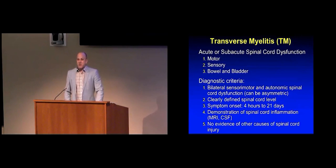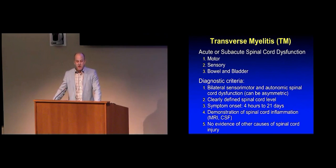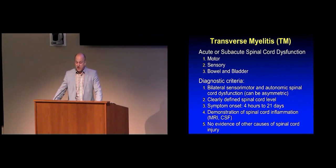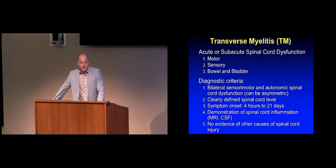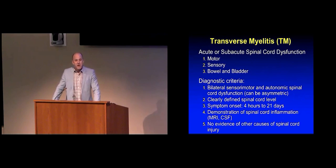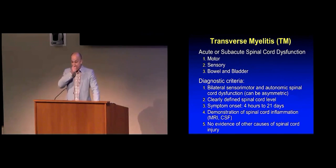So what do we mean when we say transverse myelitis? What we're talking about is an acute or subacute spinal cord dysfunction — that could include a motor problem, difficulty moving multiple or one limb, a sensory problem, difficulty feeling something, or even a problem with bowel or bladder. You don't have to have all three, but you may need at least one of those symptoms.